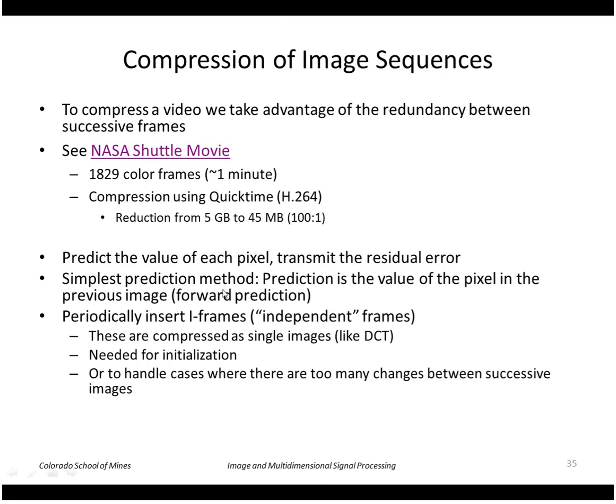We will periodically insert independent frames which are compressed as single images to avoid error buildup. So we have to use this to initialize the whole sequence. But then we'll periodically, like every second or so, insert these iframes. Finally we can also base the prediction on the next frame and do backward prediction.